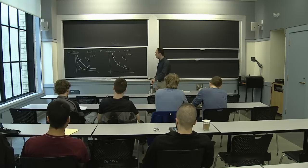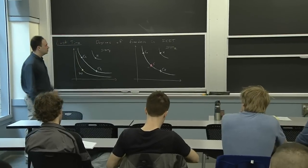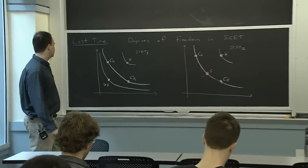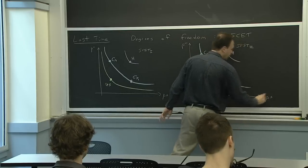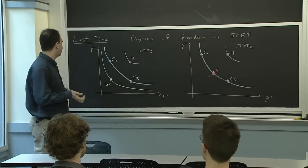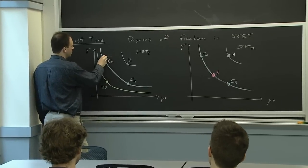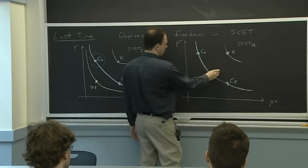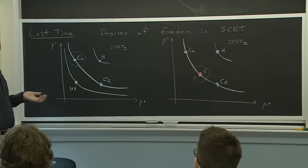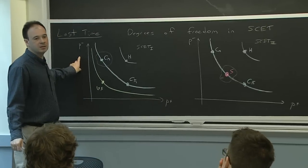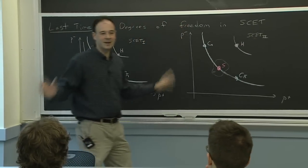Last time we were talking about degrees of freedom in SCET, and I drew two pictures emphasizing that the difference between them is really where the degrees of freedom live in momentum space—the P-minus, P-plus plane. Unlike most effective field theories, in this effective field theory we have degrees of freedom that have to be identified by two variables rather than just one. We need two variables to say where collinears are or where softs are, and there is generically a dependence on the process.